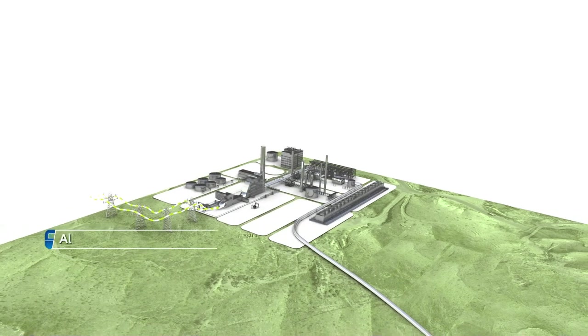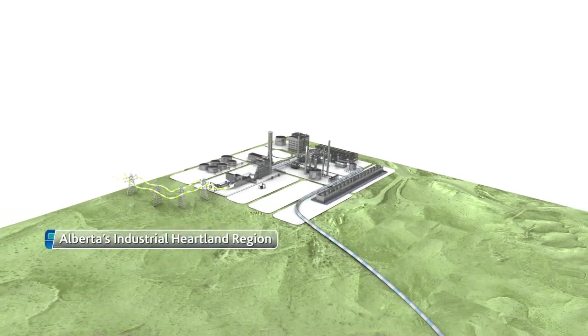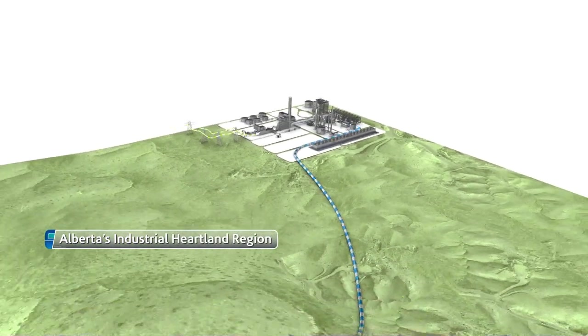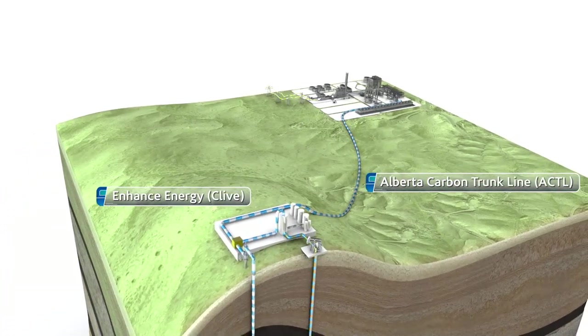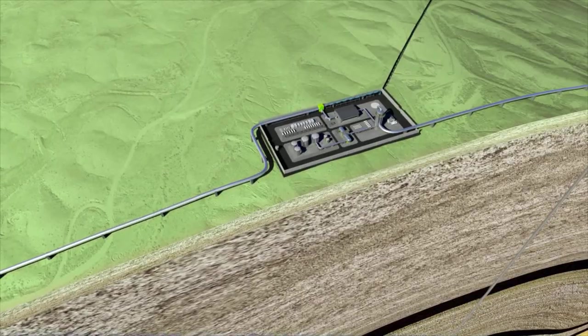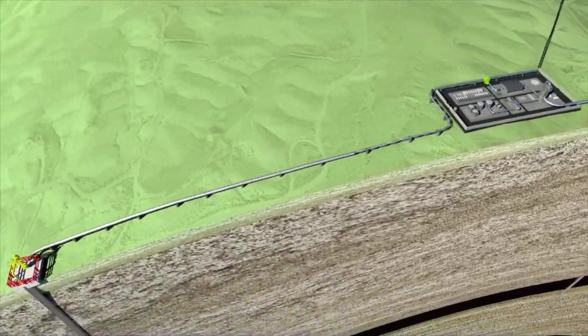CO2 will be transported from the Alberta industrial heartland region to the Clive Field, where enhanced oil recovery with permanent CO2 storage will be used to extend the life of the Clive oil field for more than 25 years.